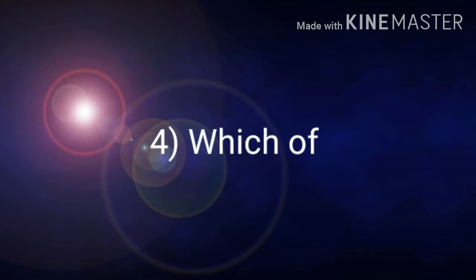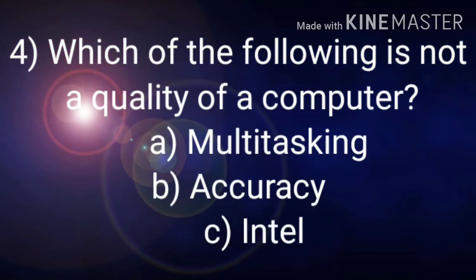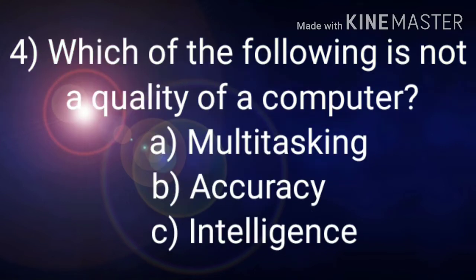Number 4: Which of the following is not a quality of a computer? Options: multitasking, accuracy, and intelligence. Answer is intelligence.